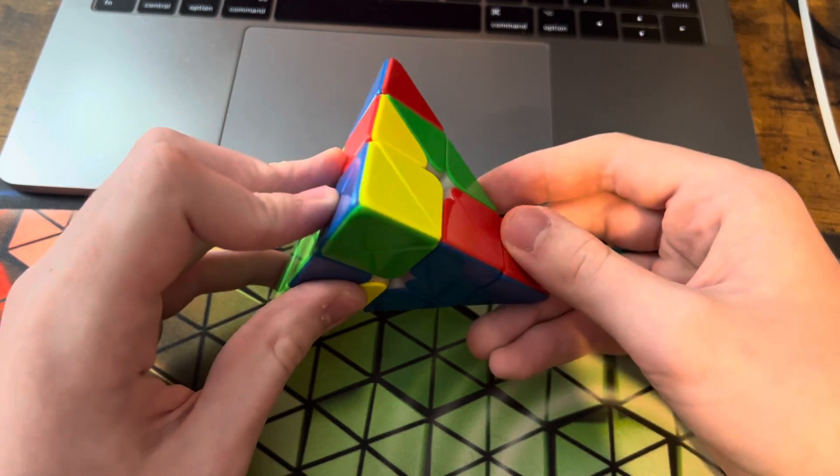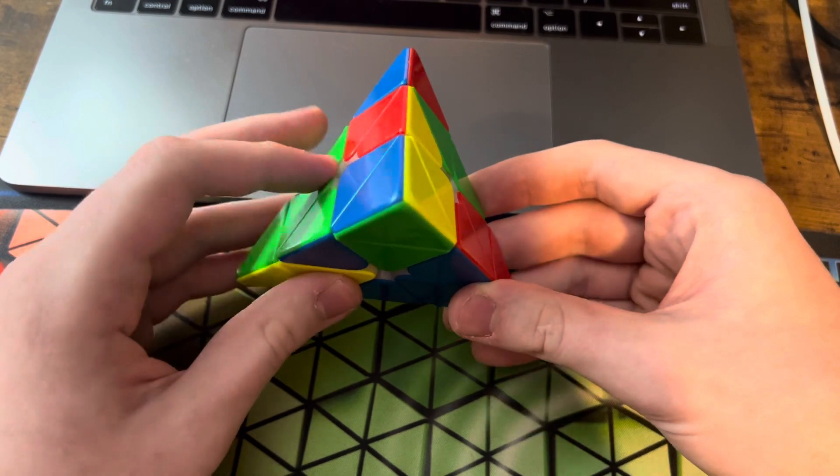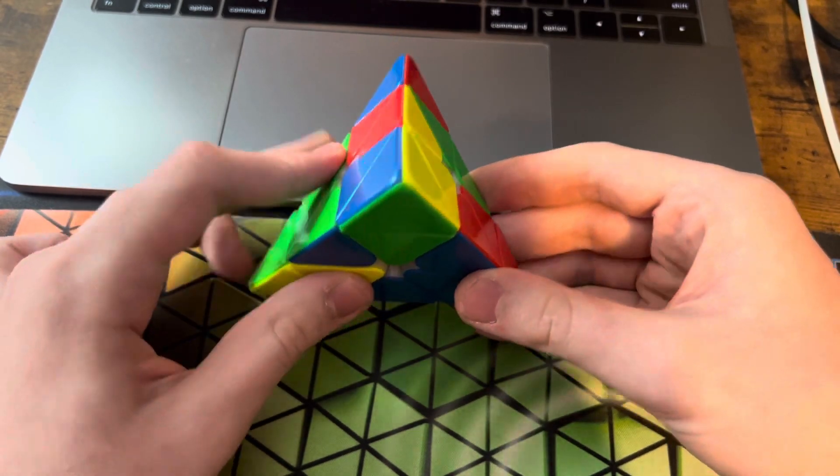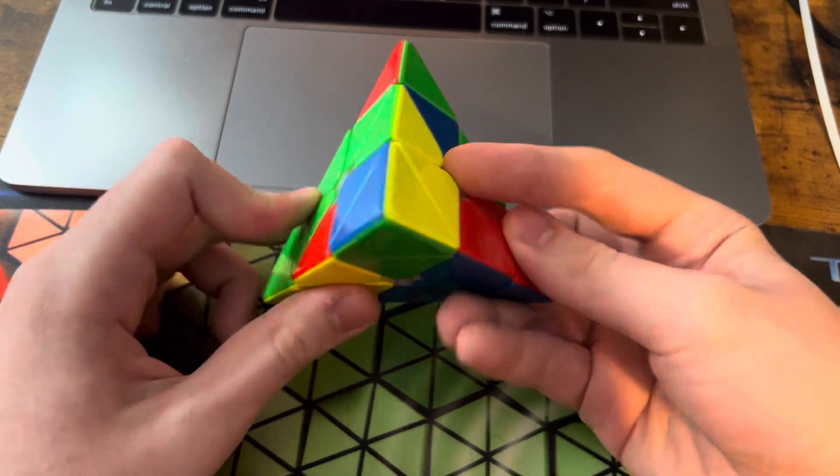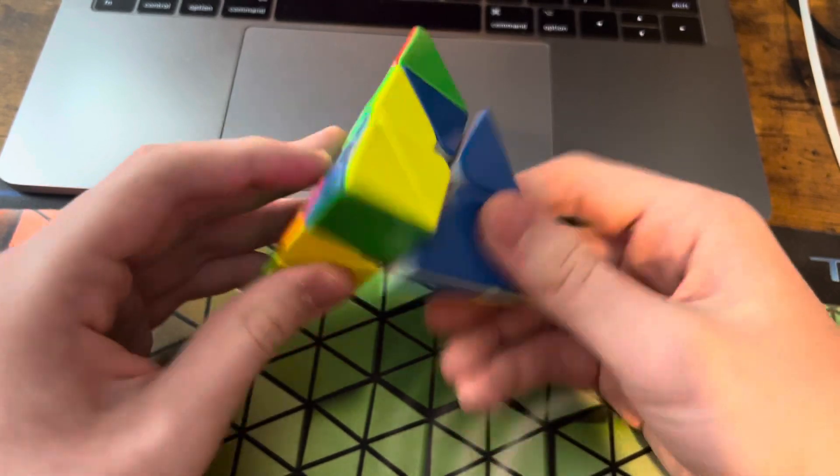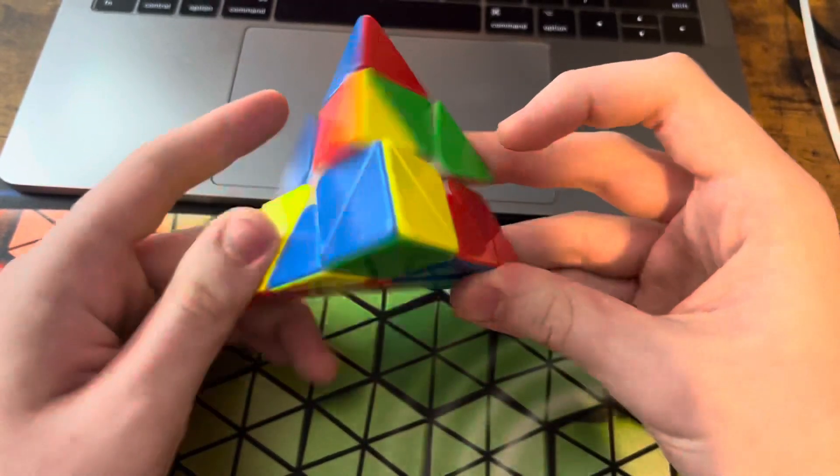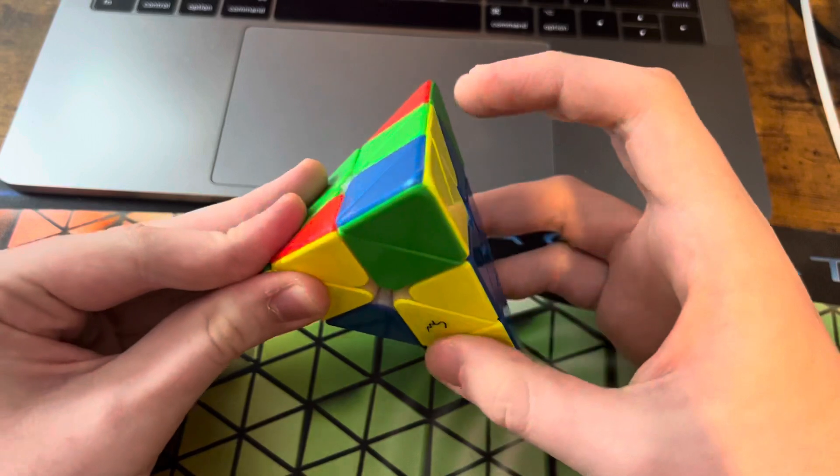I started off by doing these two tips, and then I solved the red V by doing L' V L R, which is just twisting this center and then solving that block.